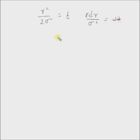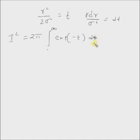Now inserting this transformation into the integral, we get I square equal to 2 pi multiplied by integral from 0 to infinity. Note that since r square varies from 0 to infinity, t also has the same limits. So the integral becomes exponential of minus t dt multiplied by sigma square.